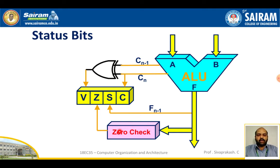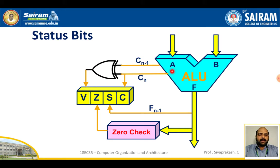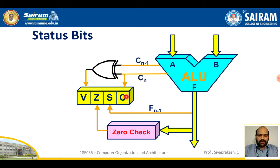The zero checker verifies whether all 8, 16, or 32 bits of the result are zero. If all bits are zero, the zero flag is set to 1. When the arithmetic or logical operation on inputs A and B produces a 9th, 17th, or 33rd bit beyond the input bit width, the carry flag is set to 1, indicating carry has been produced from the ALU.